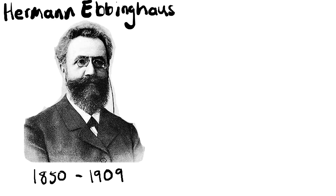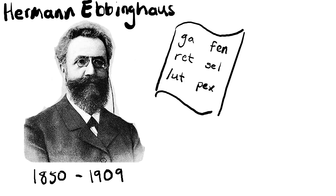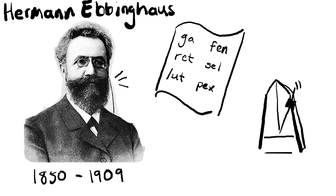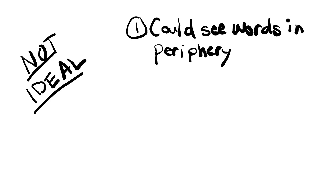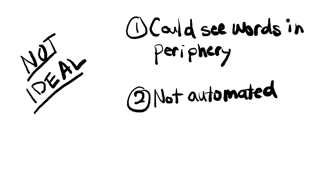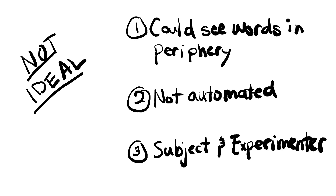The story starts with Hermann Ebbinghaus, a man who conducted very important memory research published in 1885. He read a long list of nonsense syllables to himself until he learned them by memory, using a metronome to keep his pace so that he'd be exposed to each word the same amount of time. However, this was not ideal — he could see words in his periphery, the method was not automated, and he was both subject and experimenter.